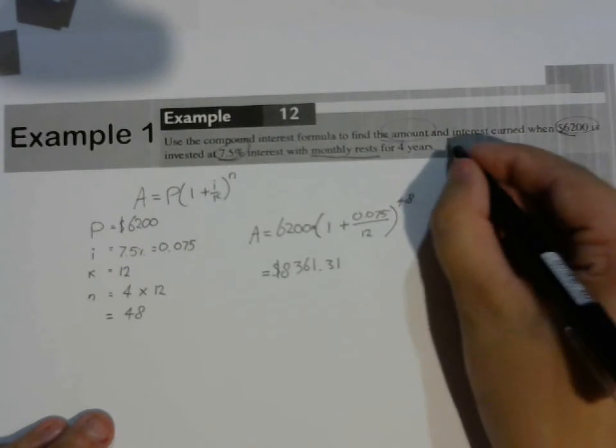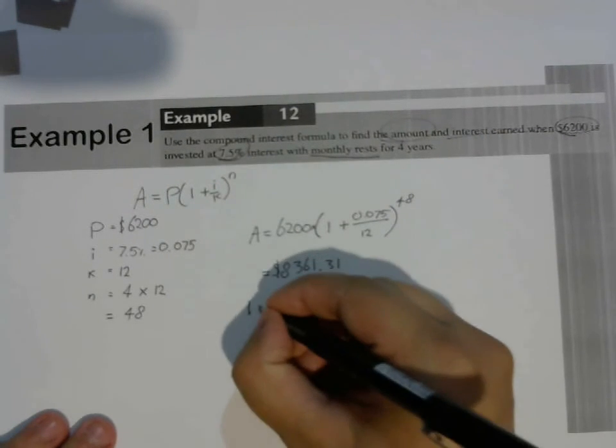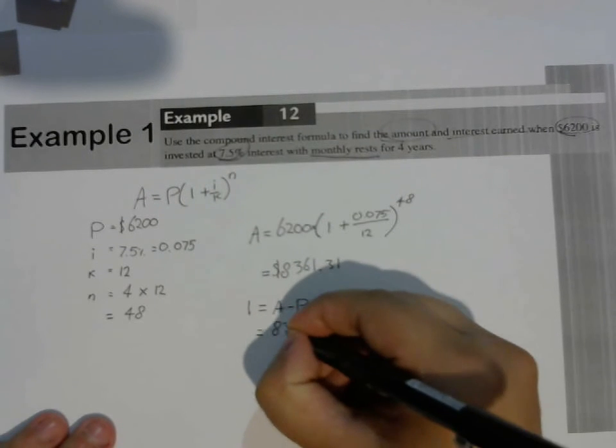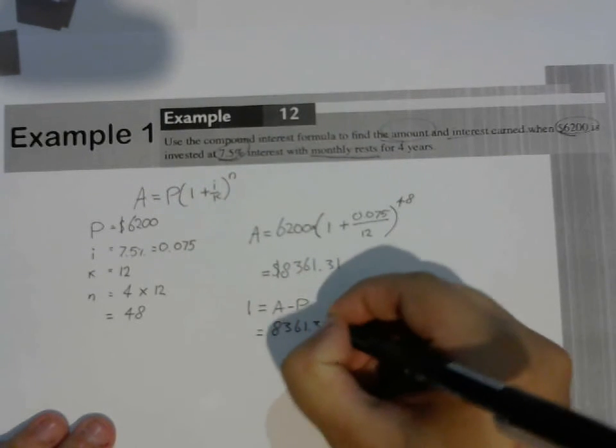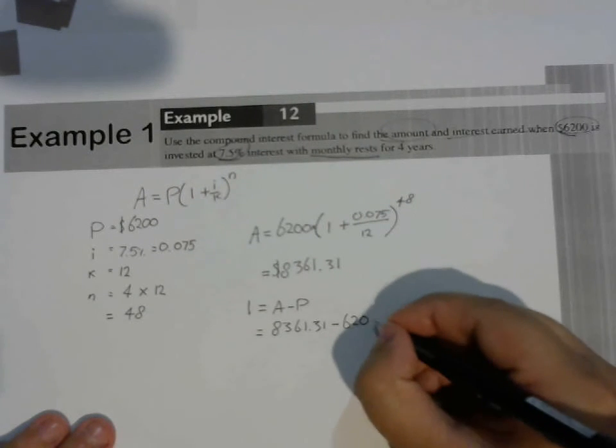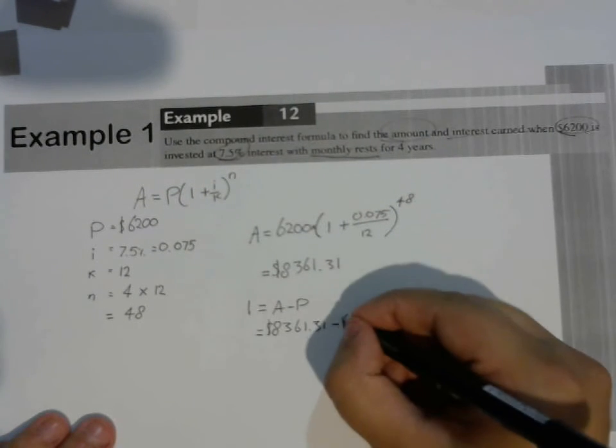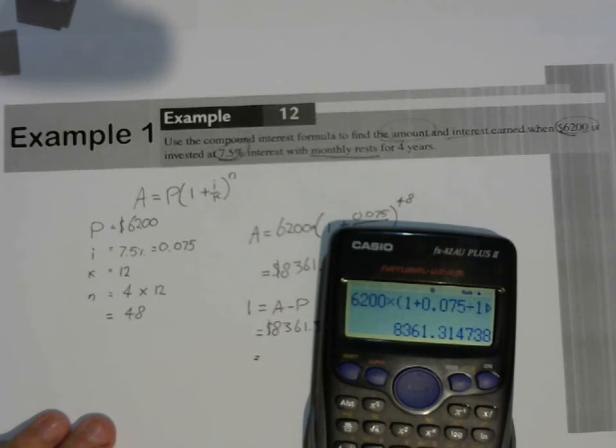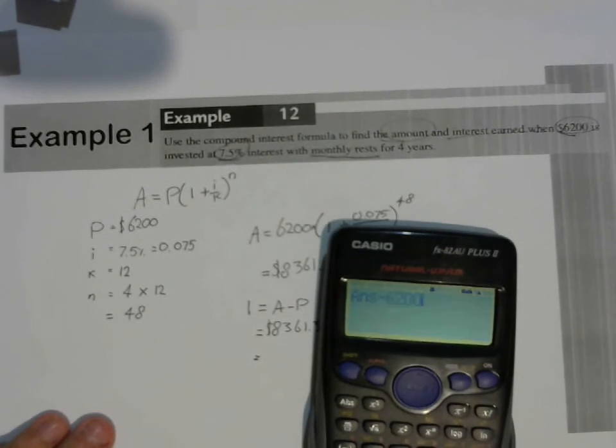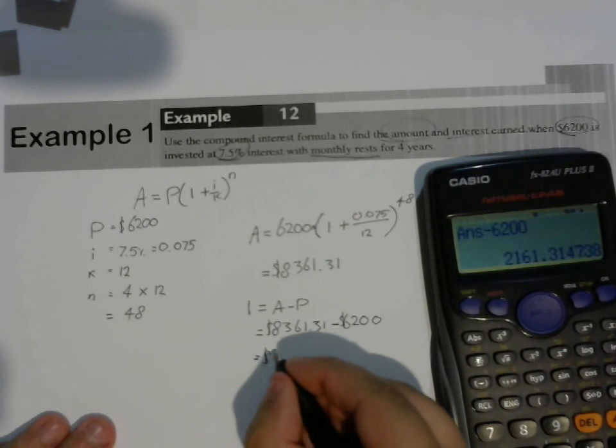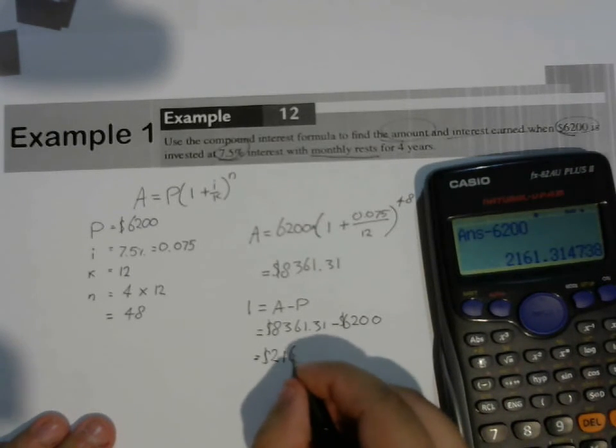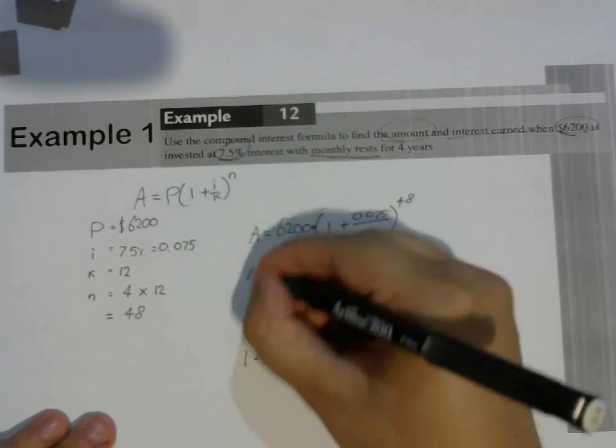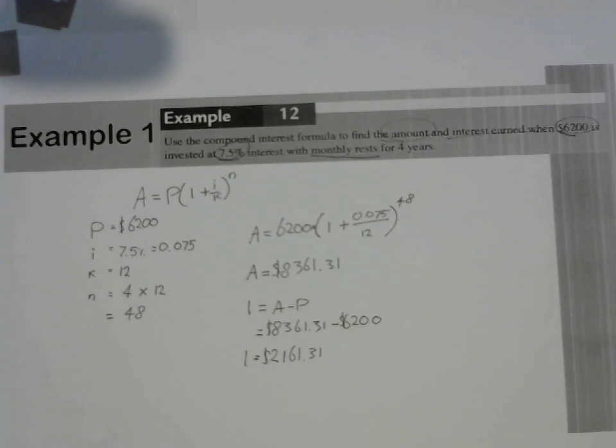We're also asked for the interest earned. So I equals A minus P, $8,361.31 minus the principal, which is $6,200. Equals, and I already have that number on my calculator, so I can just go minus $6,200. Equals $2,161.31 is the interest paid or interest earned.